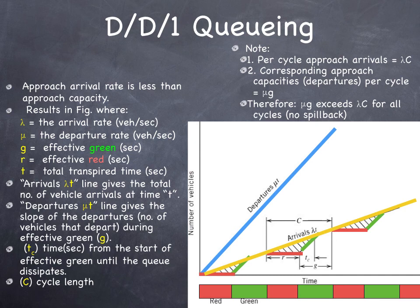The D/D/1 queuing process has deterministic arrivals, deterministic departures, and one-line or channel. We do that because it's easier to model, and it's not terribly inaccurate.